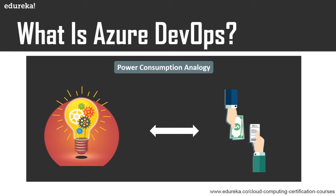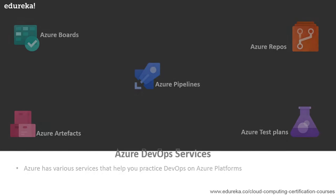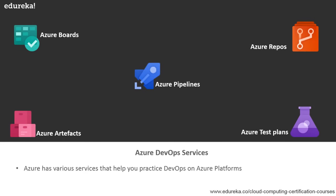This approach is called DevOps — bringing developers and operations teams together to continuously integrate and deliver software. What is Azure DevOps? If you implement this DevOps approach on top of the Azure platform, you can call it Azure DevOps. When I say Azure DevOps, there are quite a few services that Azure provides which basically help you carry out DevOps operations. These are the Azure DevOps services: Azure Boards, Azure Artifacts, Azure Repos, Azure Test Plans, and Azure Pipelines.